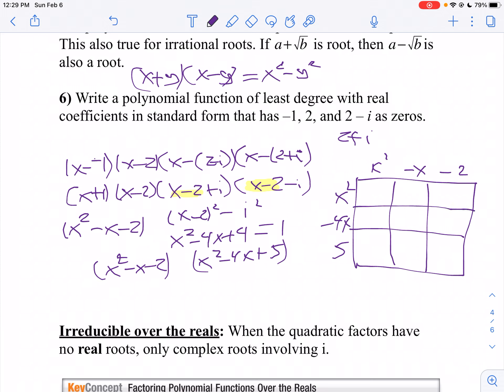This is a strategy to help me distribute all my terms. So I get x to the fourth minus x cubed minus 2x squared. Then I'll take negative 4, so I'll get negative 4x cubed, positive 4x squared, and then positive 8x.